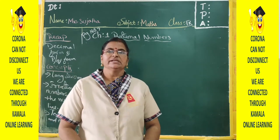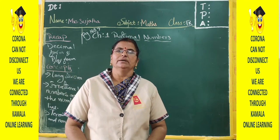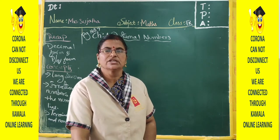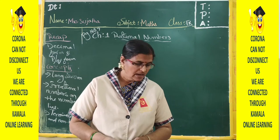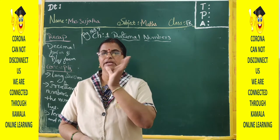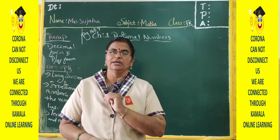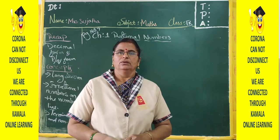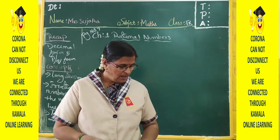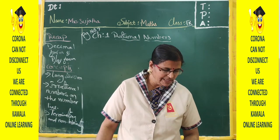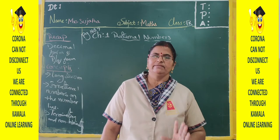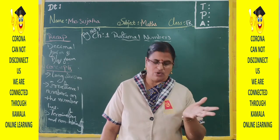In the previous session, we learned number lines, rational numbers on the number line, inserting a rational number between any two rational numbers, decimal form, and changing to p/q form. Now in exercise 1.1, I'll explain sum 8 and recall sum 1 once again.